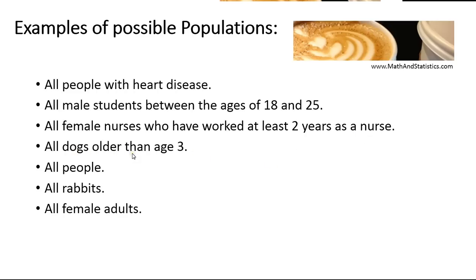Another example might be all dogs older than age three. You might be working with a zoologist who is interested in behaviors or nutritional aspects helping dogs of a certain age, so their population of interest would be all dogs older than age three. Another population might be just all people — there's a lot of research out there that affects every single one of us, and in that case the population is all people in the entire world. This might cover things such as how smoking affects our health, how diet affects our health, and so on. Another example might be all rabbits — a zoologist interested in different feeds that help rabbits live a longer and more comfortable life would have all rabbits as their population of interest.